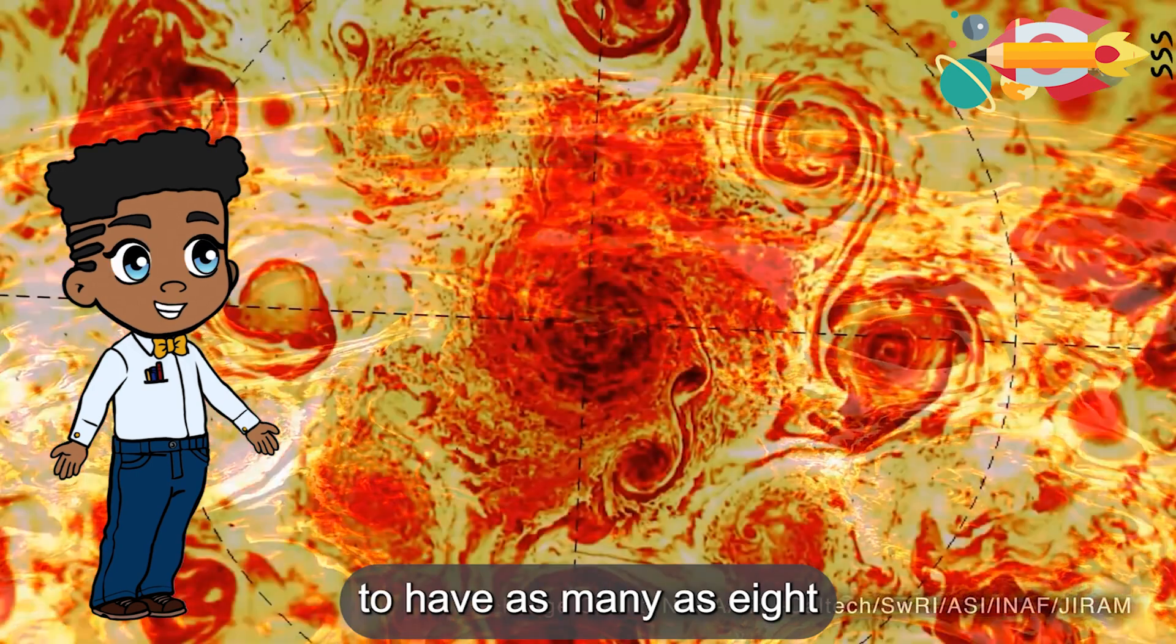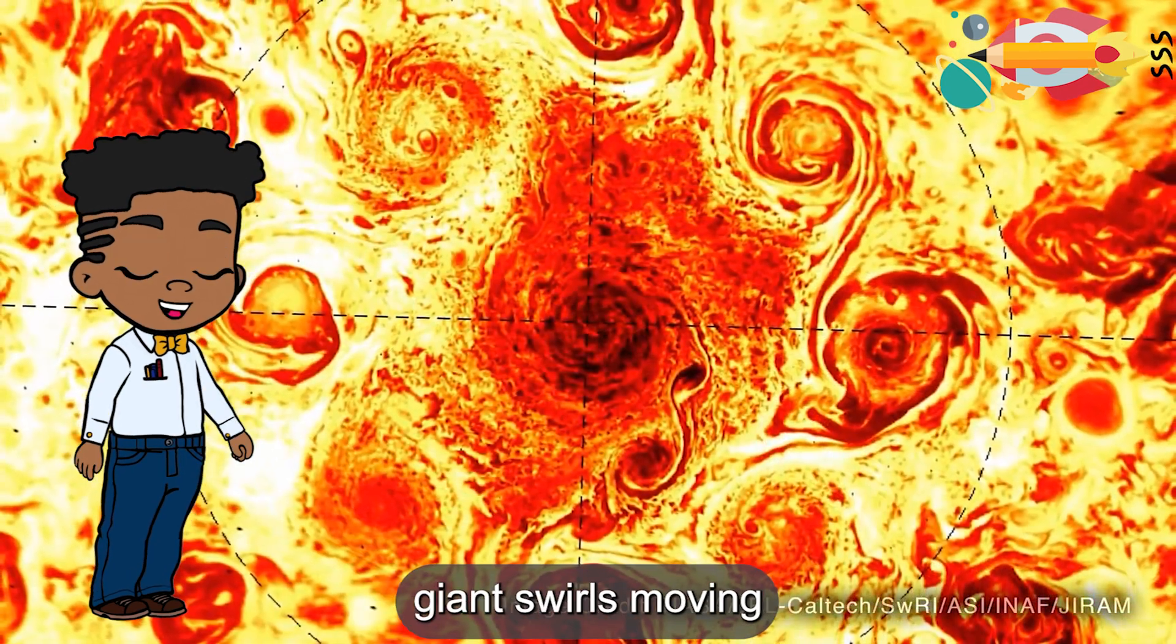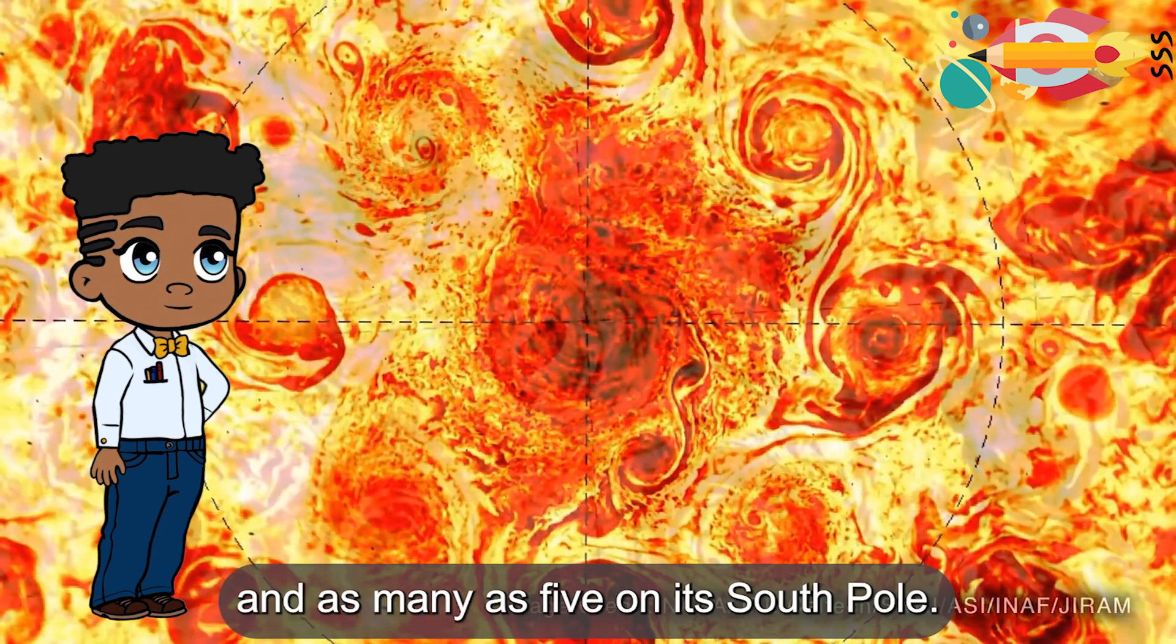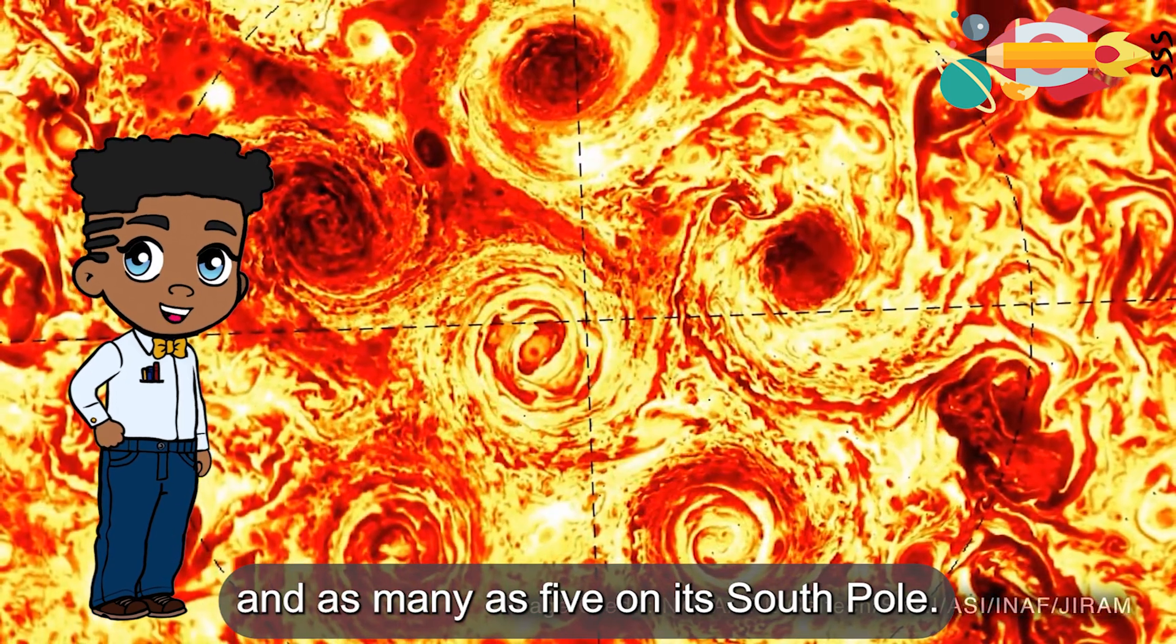Jupiter was observed to have as many as eight giant swirls moving simultaneously on its north pole and as many as five on its south pole.